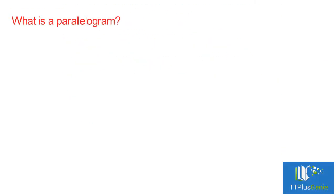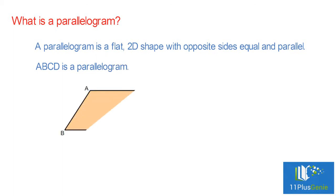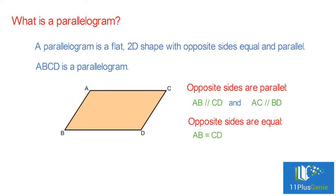What is a parallelogram? A parallelogram is a flat 2D shape with opposite sides equal and parallel. In this diagram, ABCD is a parallelogram. Opposite sides are parallel: AB is parallel to CD and AC is parallel to BD. Opposite sides are equal: AB equals CD and AC equals BD.